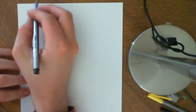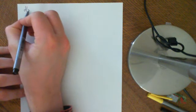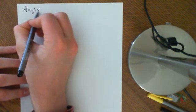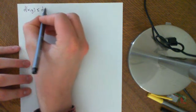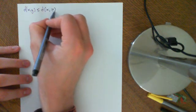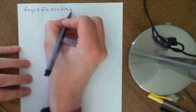In this video we're going to quickly generalise the triangle inequality. The fourth axiom of a metric space was that the distance between any two points x and y was going to be less than or equal to the distance between x and a third point z, plus the distance between that third point z and y.